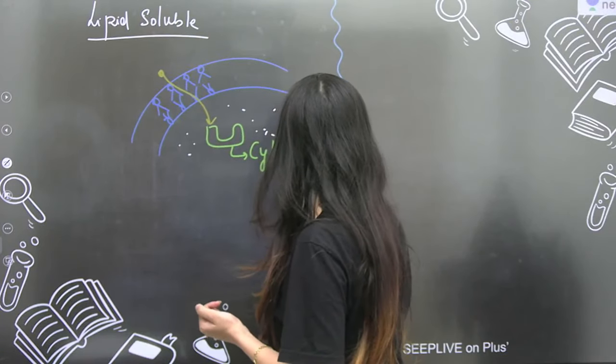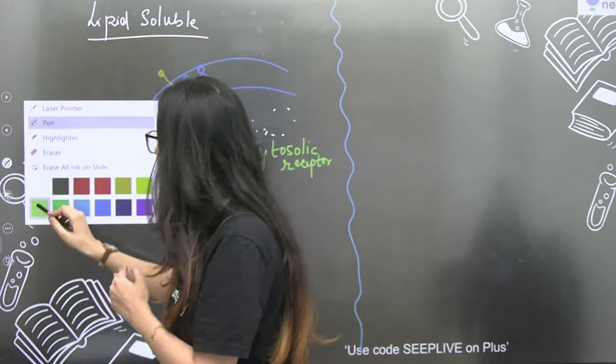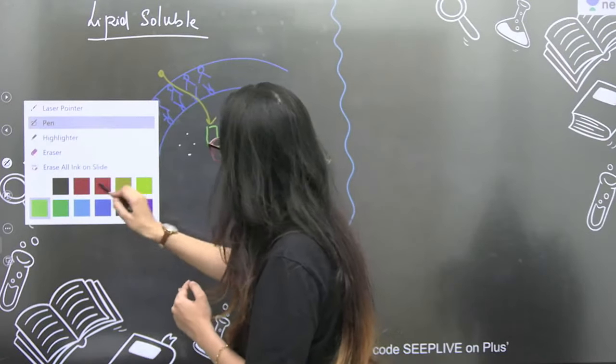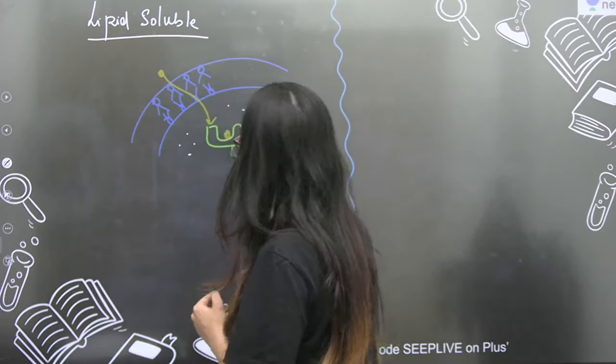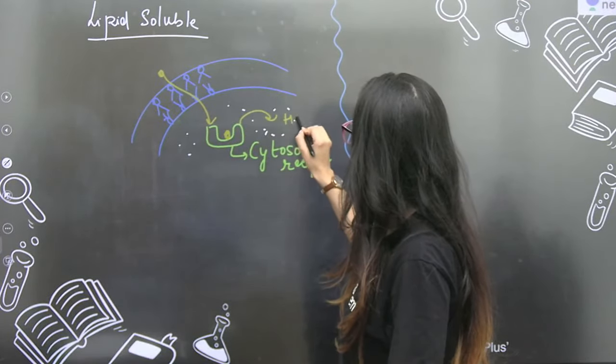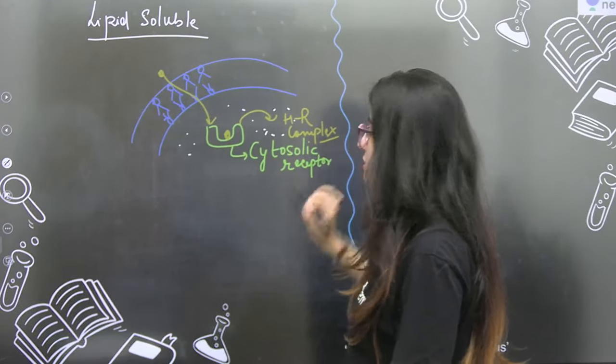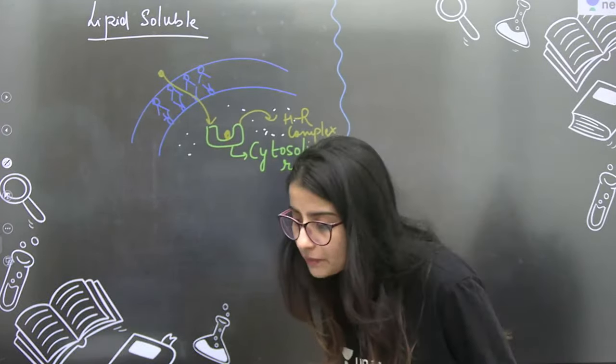When the hormone comes inside, after coming in, it binds with the receptor. After connecting, it has made a complex. The complex is called hormone-receptor complex. It has been created in the cytoplasm - a hormone-receptor complex has formed.